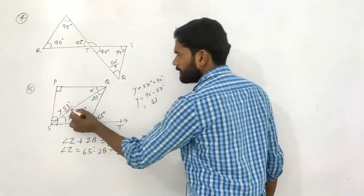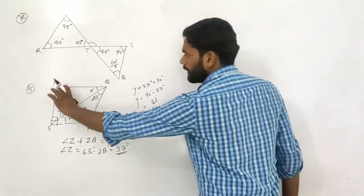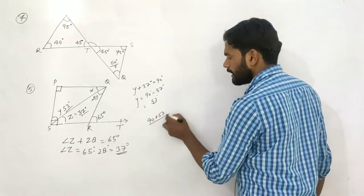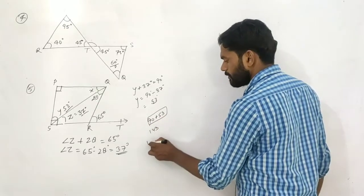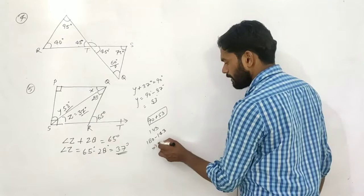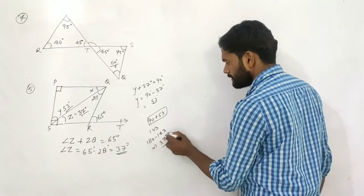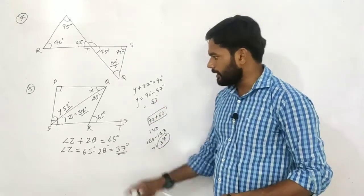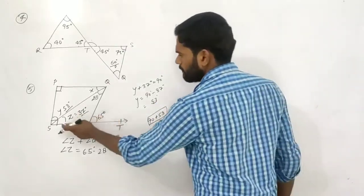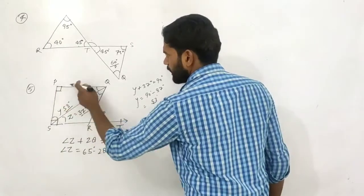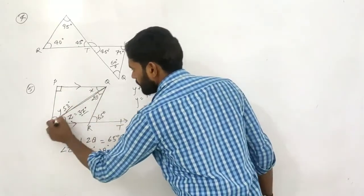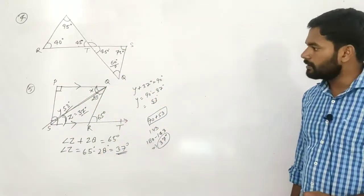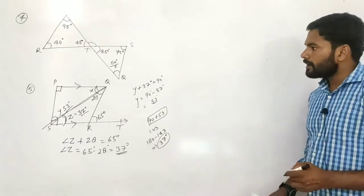Subtracting from 180, I get 90 plus 53 equals 143. Minus 143, you get 37 degrees. So the value of x and y: x equals 37 degrees because they are alternate interior angles when parallel lines are cut by a transversal line. Clear?